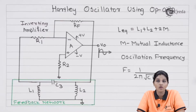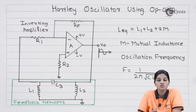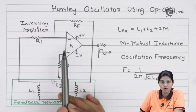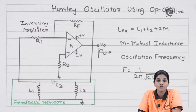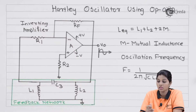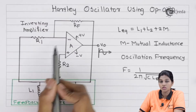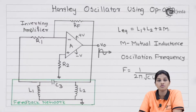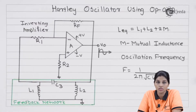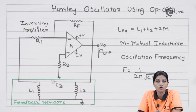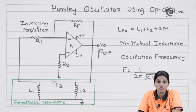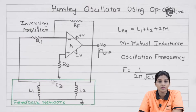From the circuit diagram of the Hartley oscillator using op-amp, we can see that the op-amp is used in inverting configuration, which provides a phase shift of 180 degrees. The output is given back to the input through a feedback network. The feedback network introduces an additional phase shift of 180 degrees, so the total phase shift around the loop becomes 0 degrees, satisfying the first condition of Barkhausen's criteria.